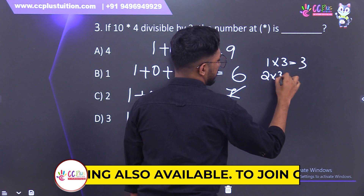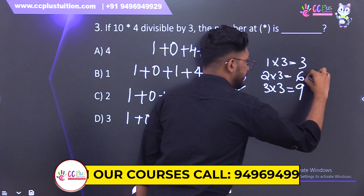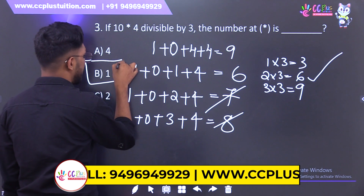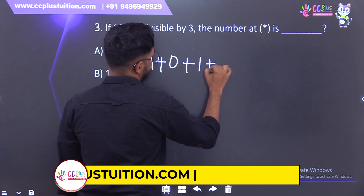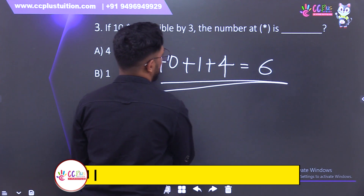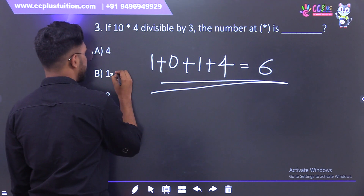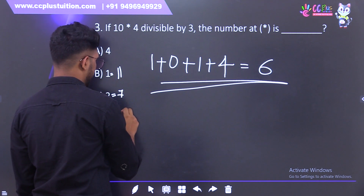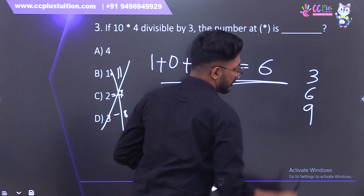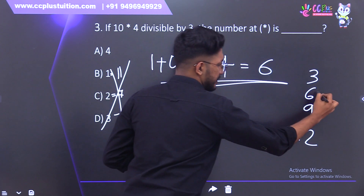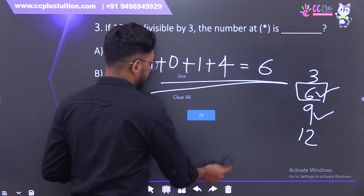The answer is 9. The digit that makes the sum divisible by 3 is 9.